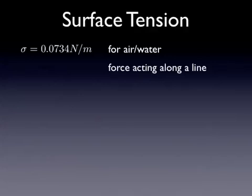To describe this, we use the Greek letter sigma. And for the air-water interface, it has a value of 0.0734 newton per meter. This is a strange unit. It's a force acting along a line. And what that means is anywhere you break that surface or on any line across that surface, you have that much force holding that surface together.